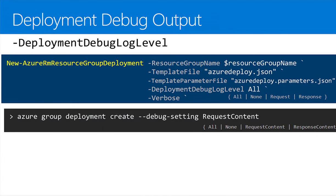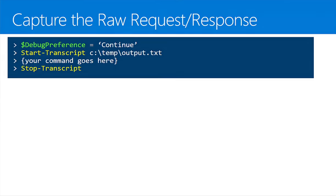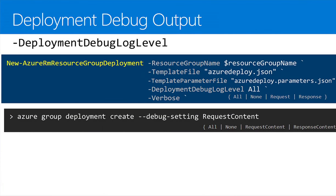Another relatively new option is Deployment Debug Log Level — a parameter on the New-AzureRmResourceGroupDeployment cmdlet and Azure CLI's group deployment command. It lets you capture request content, response content, or all of it. Similar to the transcript approach but works specifically when deploying a template. Of course, beware that if you're sending secrets like passwords, you'll capture those too, so be careful about logging sensitive data.